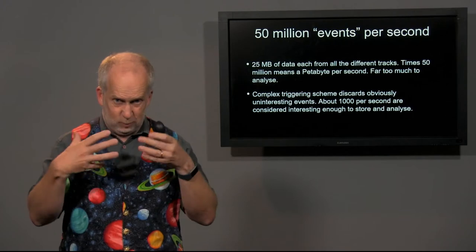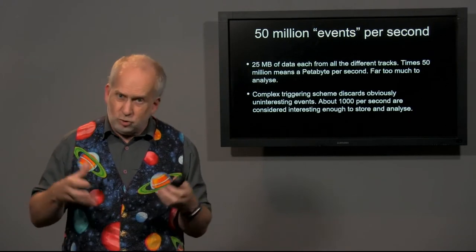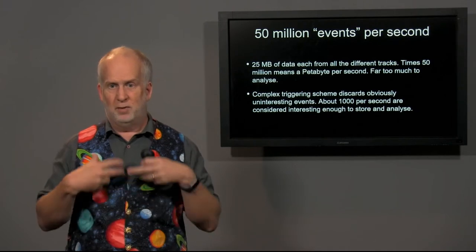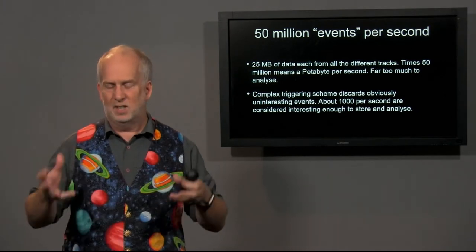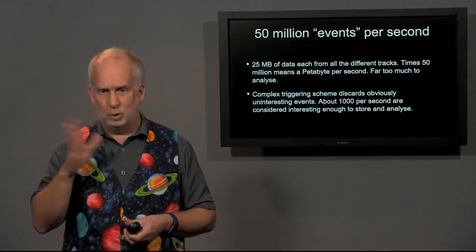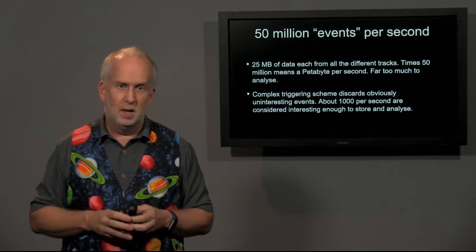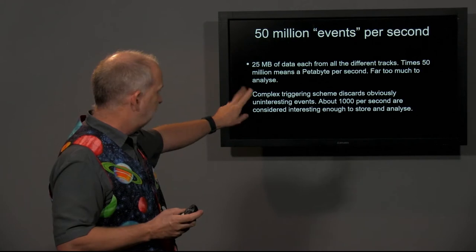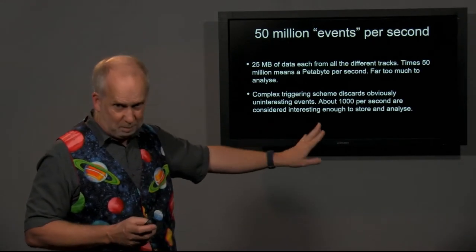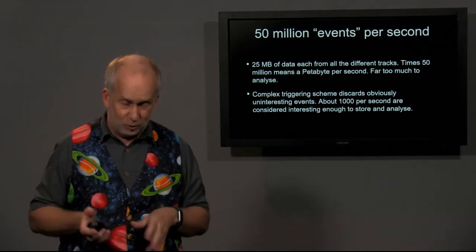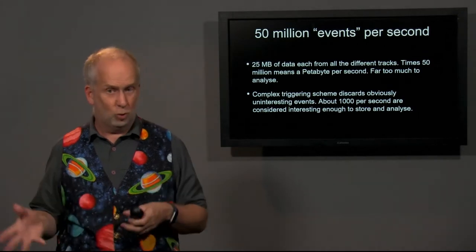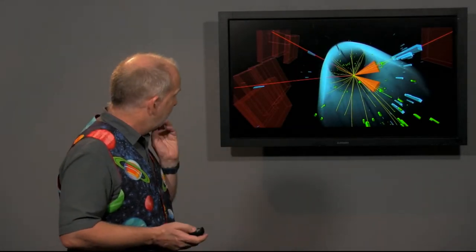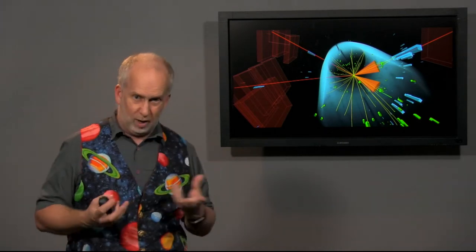So what we need is some sort of triggering system. Most of these collisions are very boring things, so there's a whole bunch of both hardware and software that looks very quickly at the data coming in and says, oh, boring, ignore. And there are only a small number which are more interesting, and these more interesting ones, about a thousand a second, that's still quite a lot, but that's a number we can possibly process, and so they are stored on disk, and then you analyze them, and you get diagrams like this one again, and from it you can try and reconstruct what actually went on.